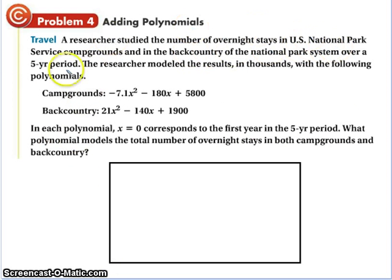Ooh, look, a word problem. So a researcher... I'll let you read it. The question says, in each polynomial, x equals 0 corresponds to the first year in the five-year period. What polynomial models the total number of overnight stays in both campgrounds and backcountry?